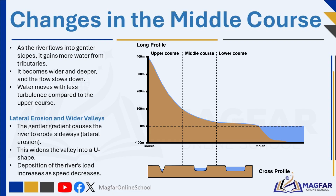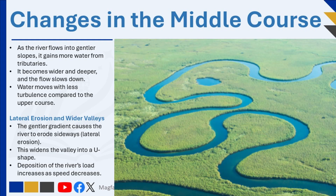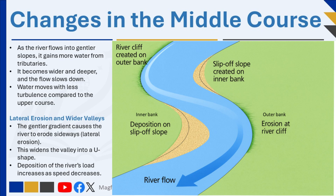River valleys are wider in the middle course, and there is more deposition of the river's load. As a result, the river begins to widen its valley, creating broader, less steep, more open valleys compared to the upper course. One of the most noticeable features in the middle course is the formation of meanders — large bends or curves in the river that develop as water erodes the outer banks where the current is fastest and deposits material on the inner banks where flow is slower. Over time, these meanders become more exaggerated.